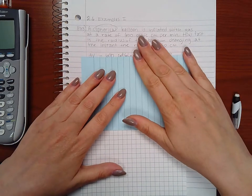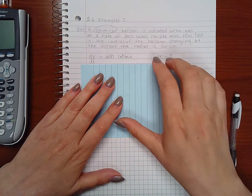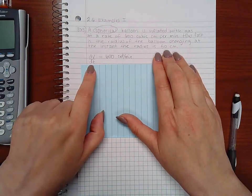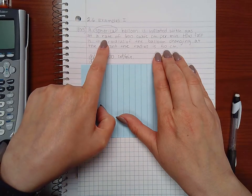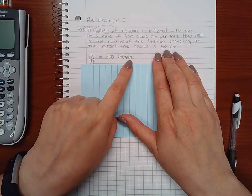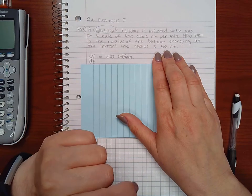Okay, so that is why I have this here where it says dV/dt, which means the derivative of the volume with respect to time. That's considered the rate, is 600 centimeters cubed per minute.